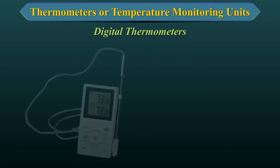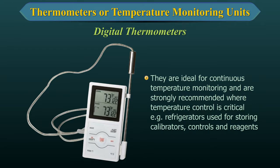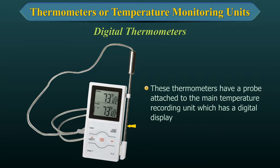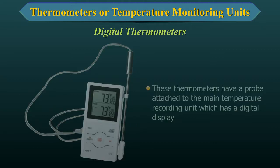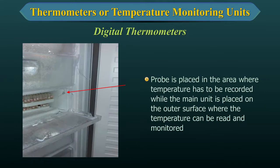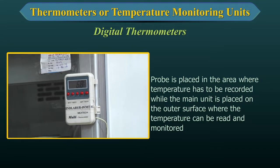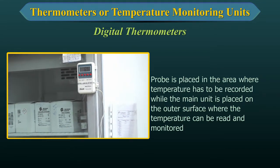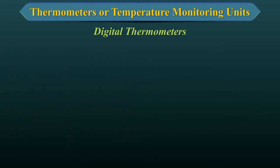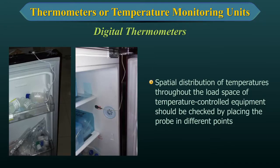Digital Thermometers. They are ideal for continuous temperature monitoring and are strongly recommended where temperature control is critical. These thermometers have a probe attached to the main temperature recording unit, which has a digital display. The probe is placed in the area where temperature has to be recorded, while the main unit is placed on the outer surface where the temperature can be read and monitored. The spatial distribution of temperatures throughout the load space of temperature-controlled equipment should be checked by placing the probe in different points.